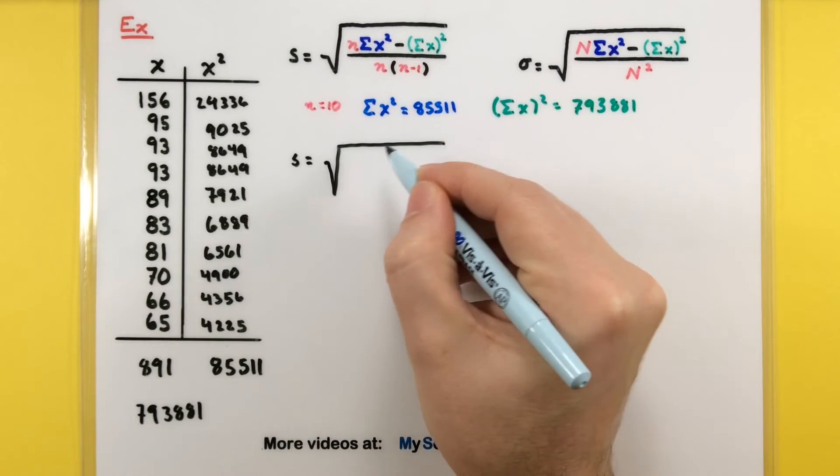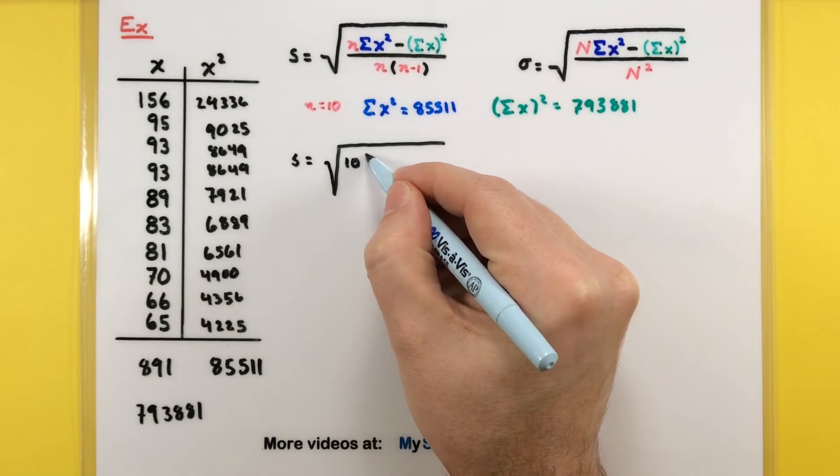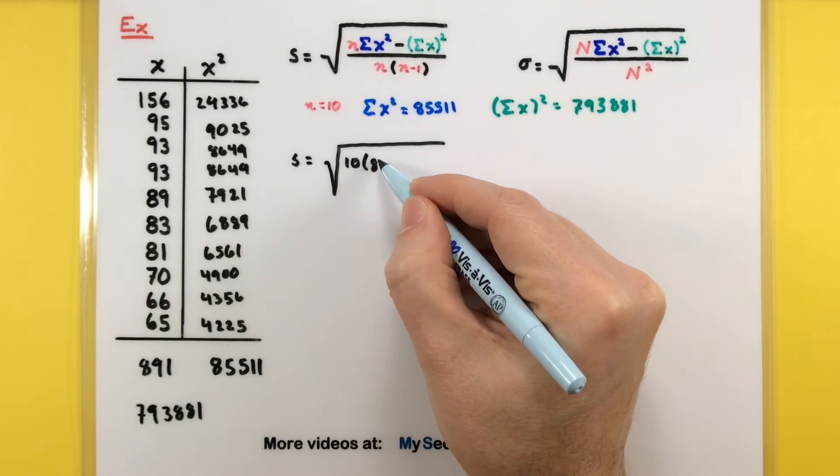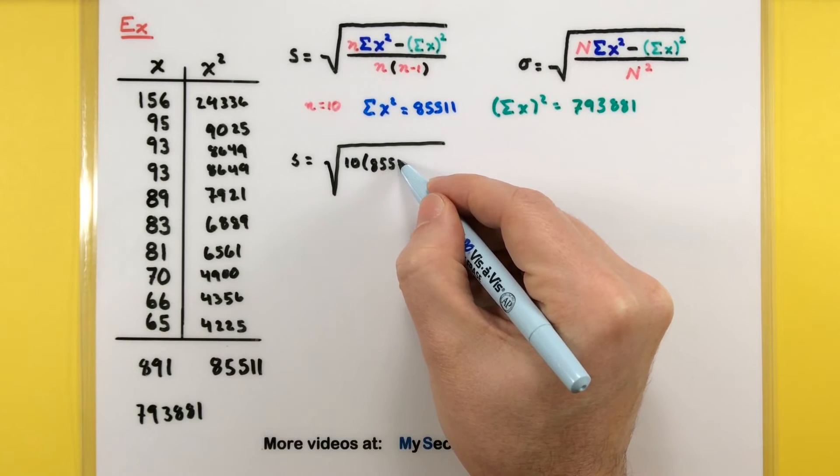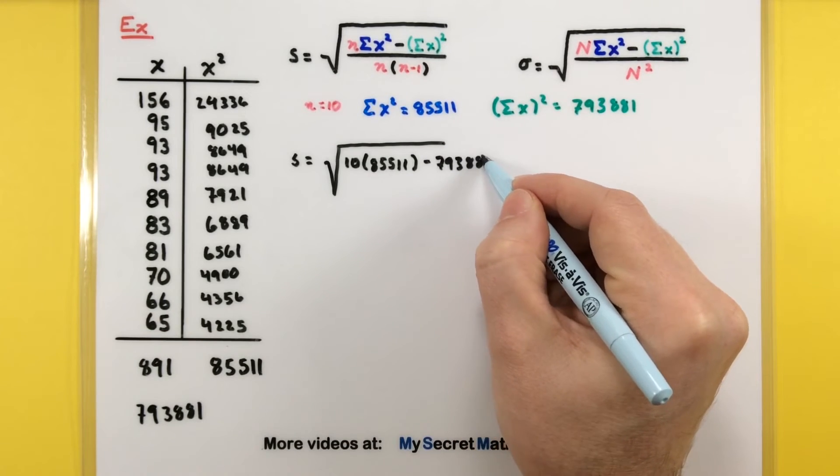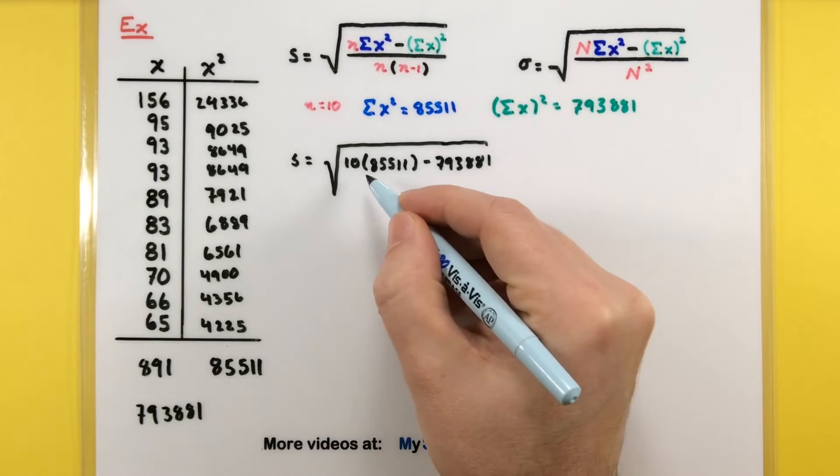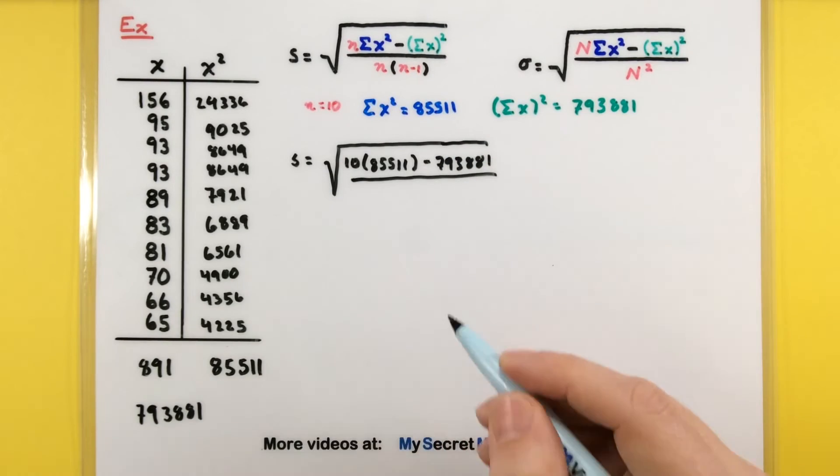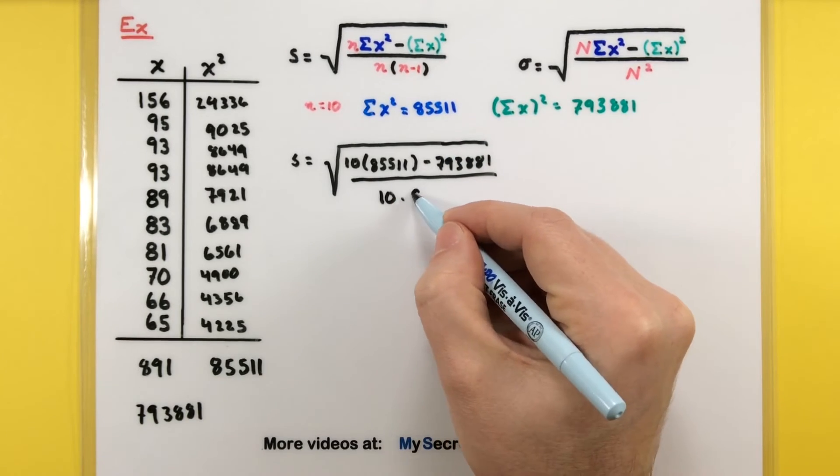So, here we're taking the square root of 10 multiplied by 85,511 minus, now we have all of this stuff, 793,881. All this will need to be divided by 10 multiplied by 9.